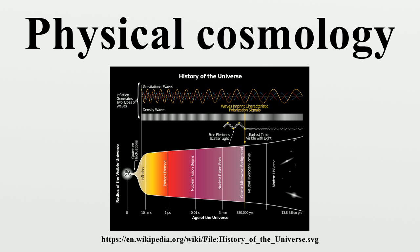In the 1910s, Vesto Slipher interpreted the redshift of spiral nebulae as a Doppler shift that indicated they were receding from Earth. However, it is difficult to determine the distance to astronomical objects. One way is to compare the physical size of an object to its angular size, but a physical size must be assumed to do this.